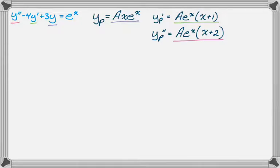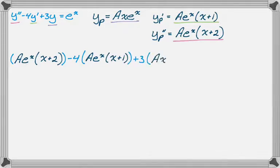Let's make our substitutions. So it's the quantity A e to the x times the quantity x plus two. And then minus four, the quantity A e to the x, the quantity x plus one. And then plus three, the quantity A x e to the x. We don't really need to put that in parentheses, but it's a good idea. And then the whole thing should equal e to the x.